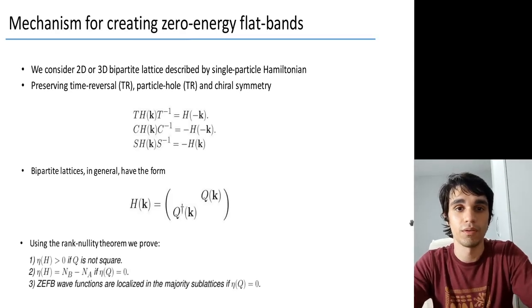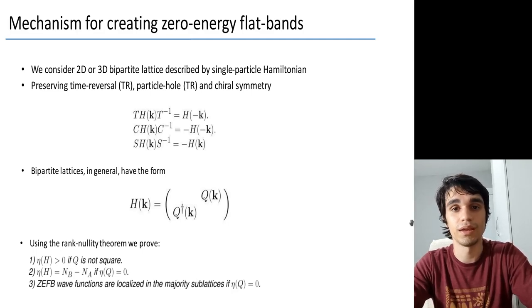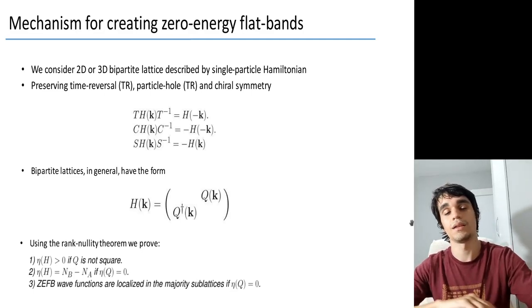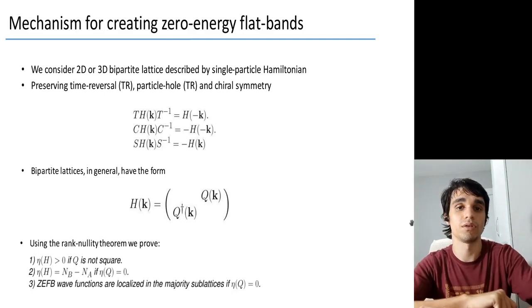We start with 2D and 3D lattices which preserve time-reversal, particle-hole, and chiral symmetry. These symmetries are particularly important for topological properties. Following the Lieb theorem, we also consider bipartite lattices, meaning lattices that can be divided in two parts that don't talk to each other.